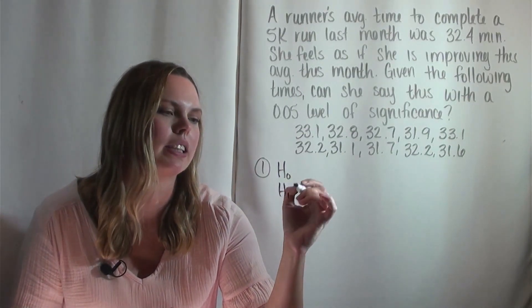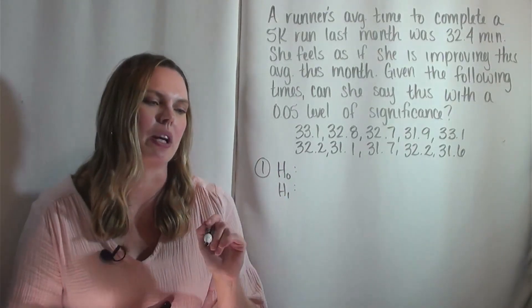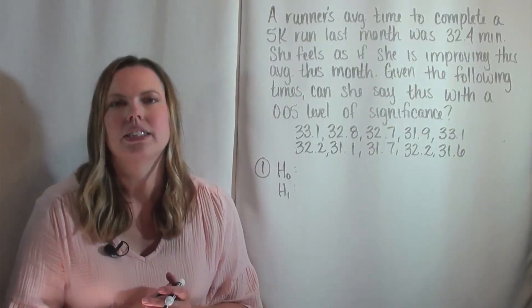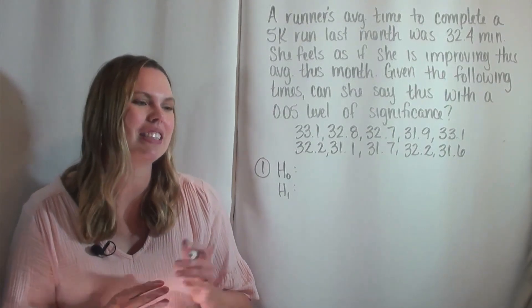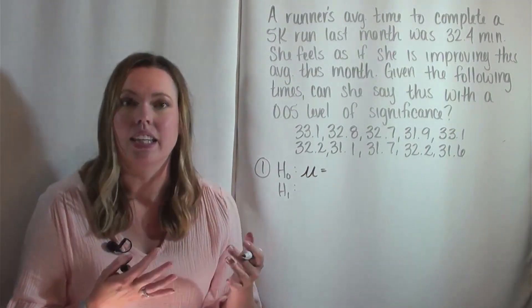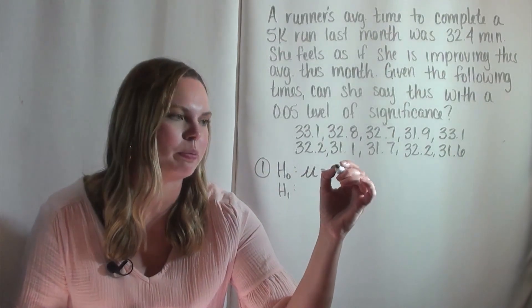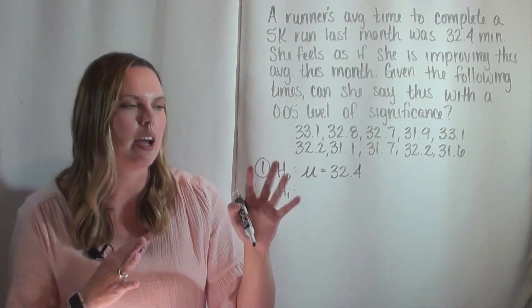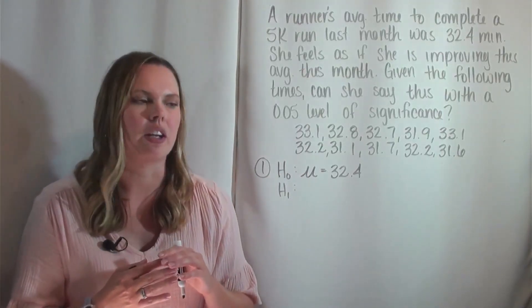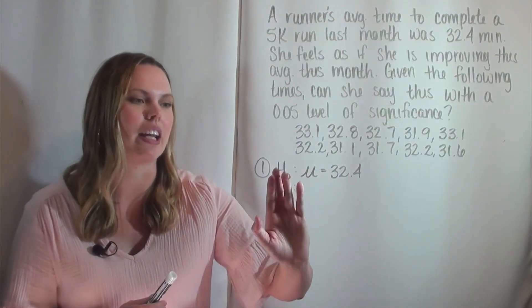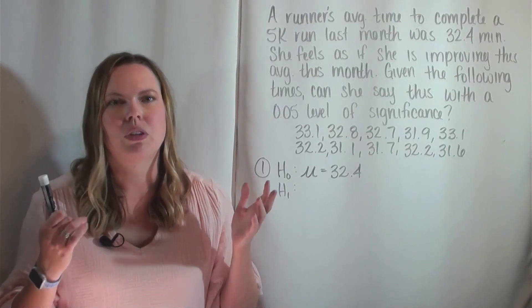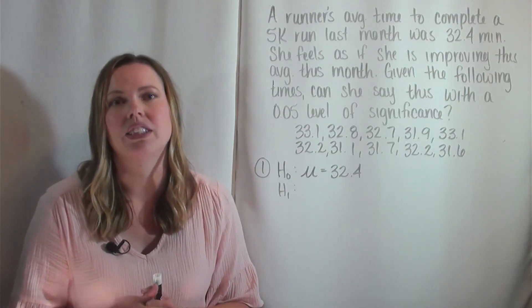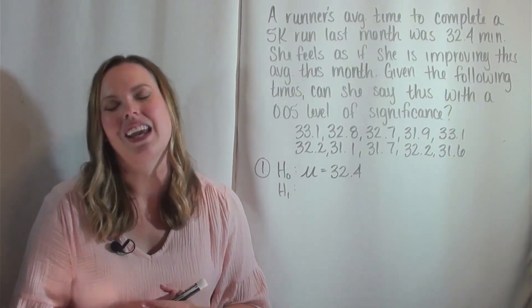We're looking for the null hypothesis H₀ and the alternative hypothesis H₁ (also written as Hₐ). The null is what is understood to be true — in this case, her current average. The null is always stated as μ equals a value; here, H₀: μ = 32.4. Make sure you specify it's the mean, not just the number.